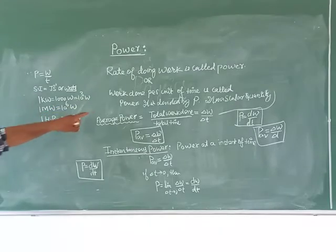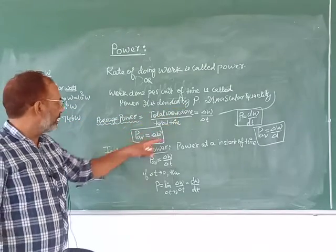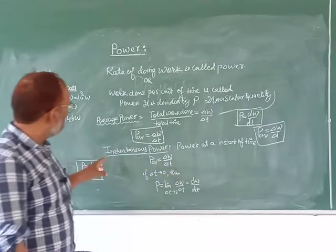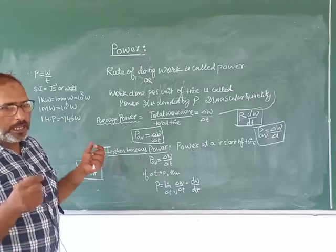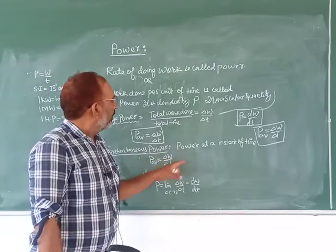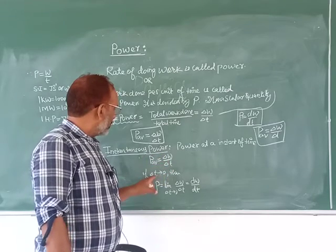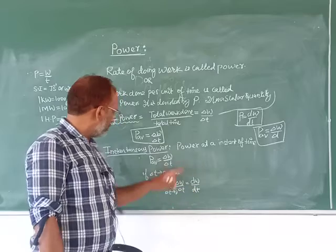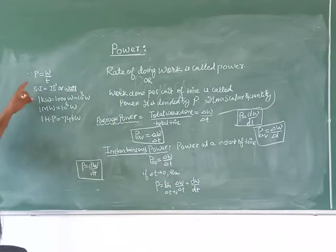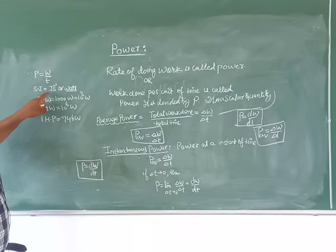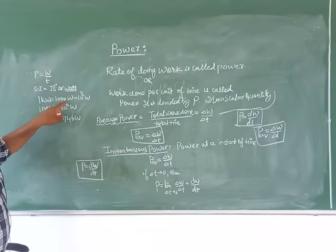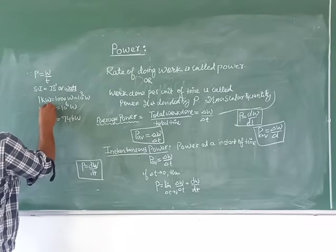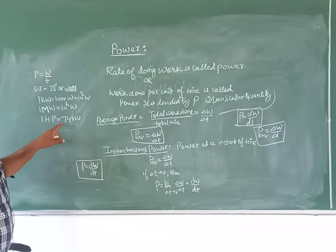Summary: The rate of doing work is called power. Power is denoted by P. It is a scalar quantity. Average power equals total work done divided by total time, delta W by delta T. Instantaneous power P equals dW by dT. SI unit of power is Joule per second or Watt. 1 kW equals 1000 Watt, 1 Megawatt equals 10 to the power 6 Watt, 1 horsepower equals 746 Watt.